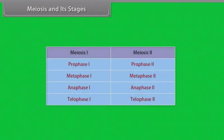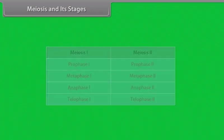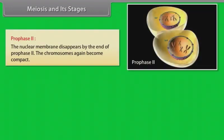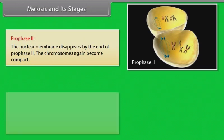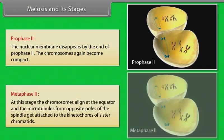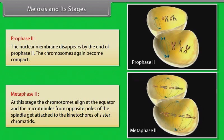Meiosis II is initiated immediately after cytokinesis, usually before the chromosomes have fully elongated. In contrast to meiosis I, meiosis II resembles a normal mitosis. The nuclear membrane disappears by the end of prophase II. The chromosomes again become compact. After prophase II, metaphase II takes place. At this stage, the chromosomes align at the equator and the microtubules from opposite poles of the spindle get attached to the kinetochores of sister chromatids.